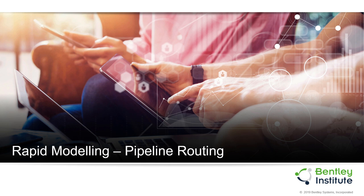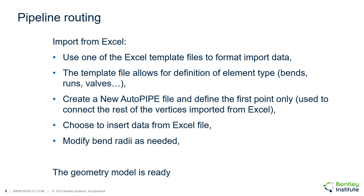First we will look at a method for rapid modelling. Consider the situation where you have a terrain geographical survey — how do you benefit from this information when it comes to modelling your pipe route? Taking the GPS data and processing it in Excel, using one of the templates provided in Autopipe, gives the basic centreline route of the pipeline. The user can also define the pipe size and the position of fittings like bends and tees during the import. By creating a dummy model, the new pipeline route can be inserted and subsequently completed for analysis in a matter of minutes instead of hours of manual modelling.